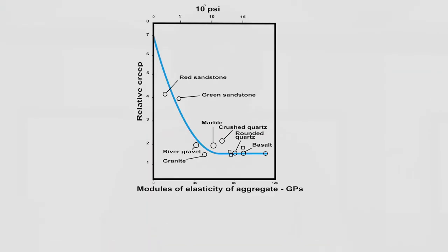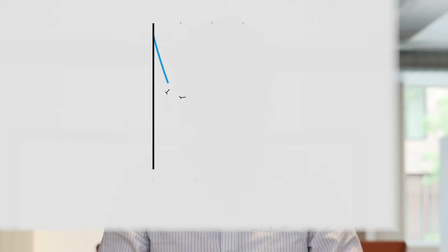There are many factors that can influence the creep of concrete, and I will highlight two of them in this video. In terms of the composition of the concrete mix, the cement paste is where all the creep occurs. The aggregates in the mixture will not creep, but when you use a stiffer aggregate, the resulting concrete will be more resistant to creep. Another important factor is the amount of water in the cement paste. Concrete with a lower water to cement ratio, or a stronger concrete, will show less creep.